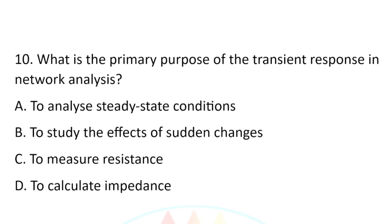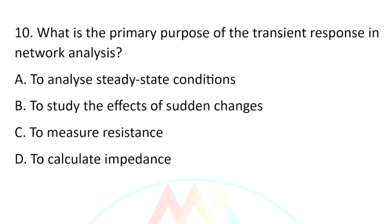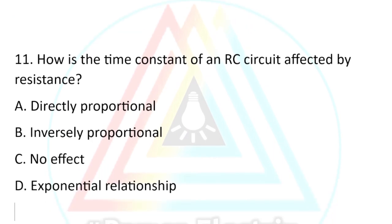Question number ten: What is the primary purpose of the transient response in network analysis? Option A, to analyze static conditions. Option B, to study the effects of sudden changes. Option C, to measure resistance. Option D, to calculate impedance. The correct answer is option B — to study the effects of sudden changes.